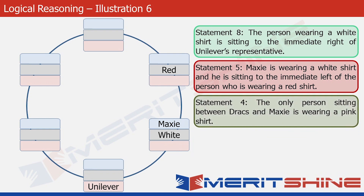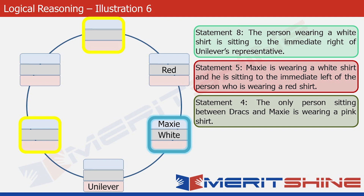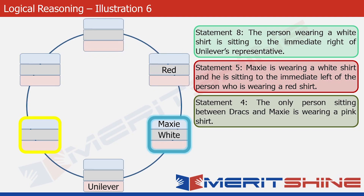The next statement we use is statement four. It tells us that the only person sitting between Drax and Maxi is wearing a pink shirt. Maxi is placed in the highlighted box, and the two possible positions for Drax are highlighted in yellow — one two places to the right of Maxi and one two places to the left. The box on the right already has red placed between them, so it cannot be pink. That position is ruled out, meaning Drax goes in the left box, and we write pink in the box between Drax and Maxi.